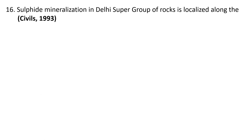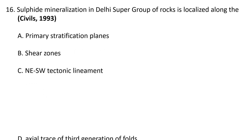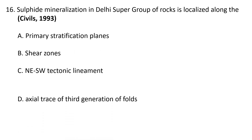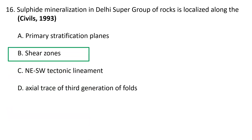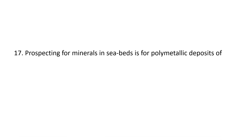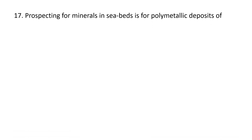Next question: Sulfide mineralization in the Delhi Supergroup of rocks is localized along A. Primary stratification planes, B. Shear zones, C. Northeast-southwest tectonic lineament, D. Axial trace of the third generation of folds. In the Delhi Supergroup of rocks, sulfide mineralization occurs along the shear zones, so B is the correct answer.